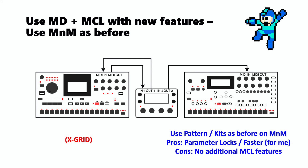Personal opinion on pros and cons. Entering notes and parameter locking is much faster for me while working on the Monomachine itself, comparing it to editing on the piano roll. A con would be that in this current setup we don't have additional MCL features such as conditional tricks and so on.